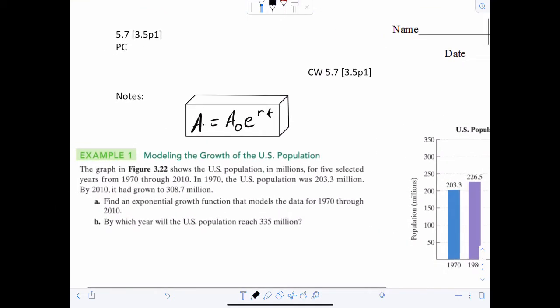A couple things here. This is your initial value. Right here is your final value. e is just a number, that's about 2.71828. r is your rate, and then t is your time.